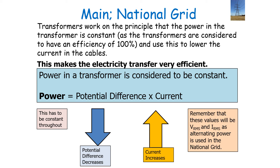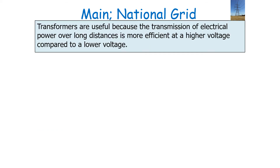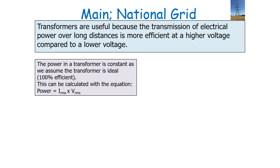Remember, in our values of potential difference and current we have to use the RMS values as alternating power is used in our national grid. Transformers are useful because the transmission of electrical power over long distances is more efficient at a higher voltage compared to a lower voltage. The power in a transformer is constant as we assume the transformer is ideal — 100% efficient — and we calculate the power with the equation P = I_RMS × V_RMS.